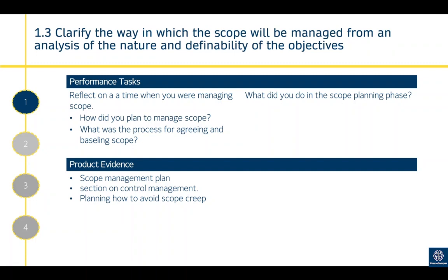So this is how you're defining scope and how you're going to manage it. Reflect on how you planned to manage scope, what the process was for agreeing and baselining scope, and what you did in the scope planning phase. Product evidence for this would be a scope management plan with a section on control management and planning on how to avoid scope creep — the term used when additional tasks and activities are added to a project and the scope gets bigger and bigger.